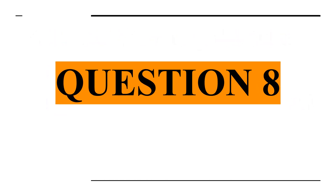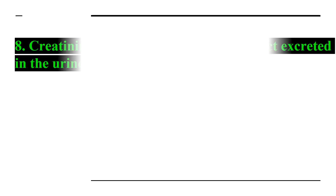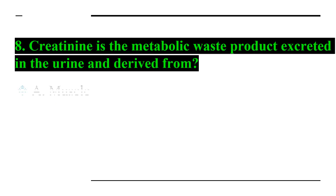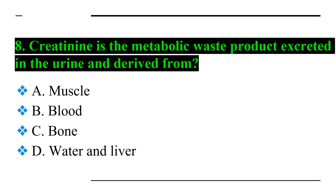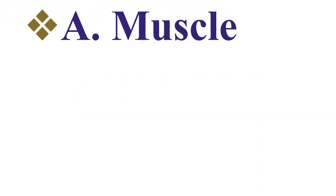Question number eight: creatinine is the metabolic waste product excreted in the urine and derived from — Option A: muscle, Option B: blood, Option C: bone, and Option D: water and liver. Answer number eight: Option A — muscle.